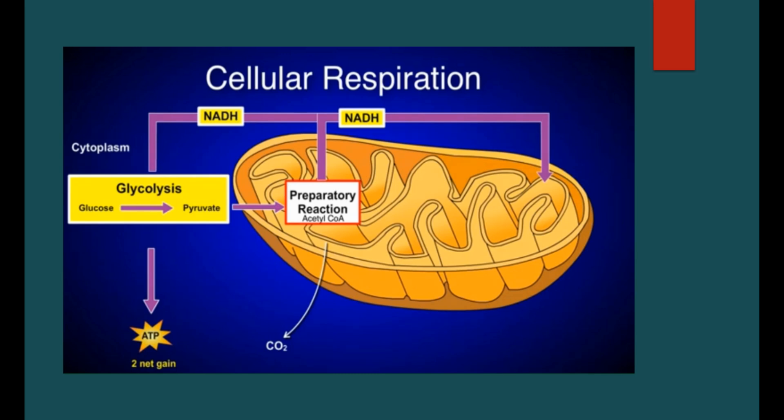In stage three, the citric acid cycle, the remaining carbons from the initial glucose are oxidized, releasing carbon dioxide. NADH and FADH2 are also produced, in addition to two ATP molecules.